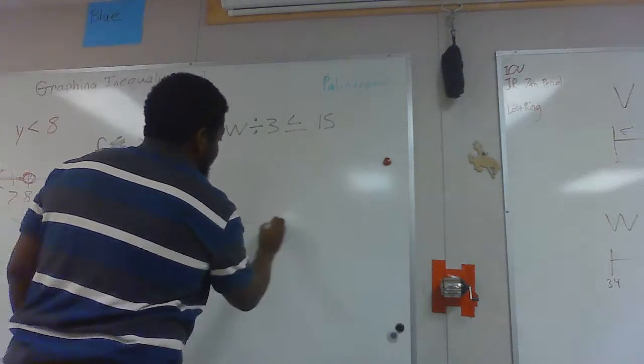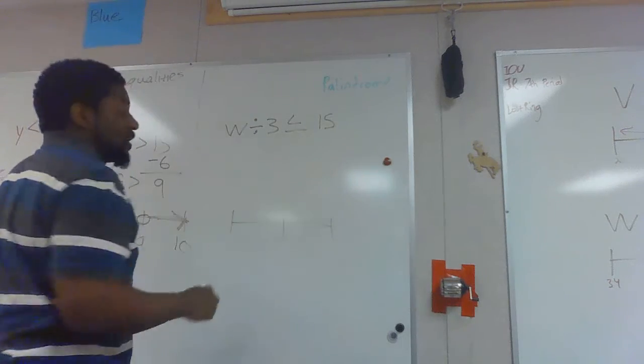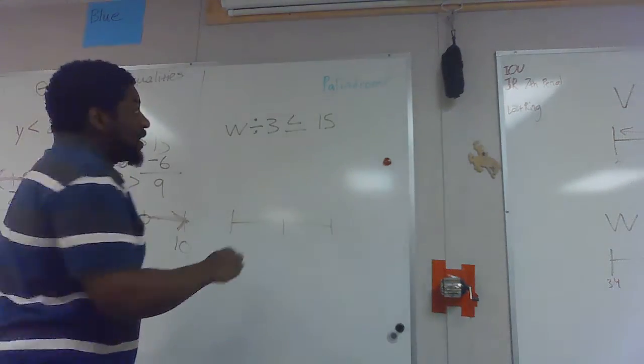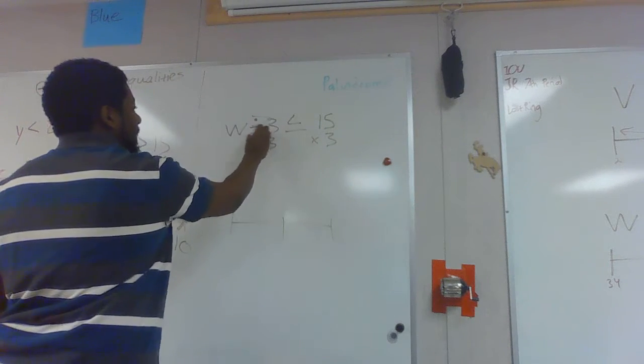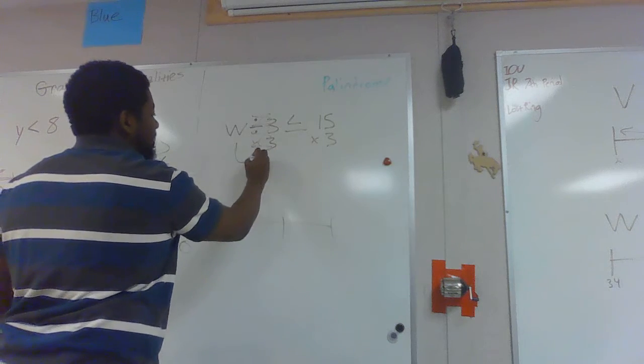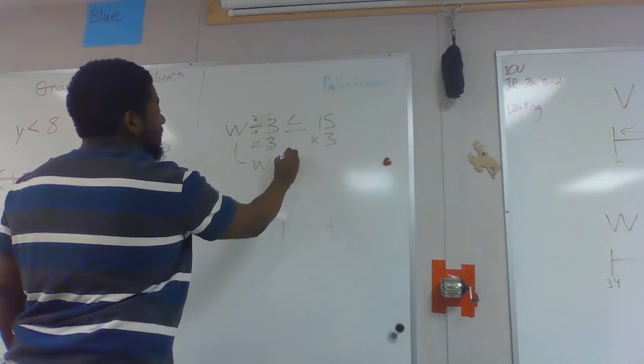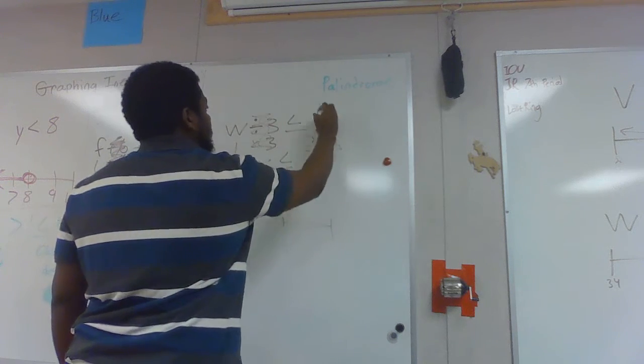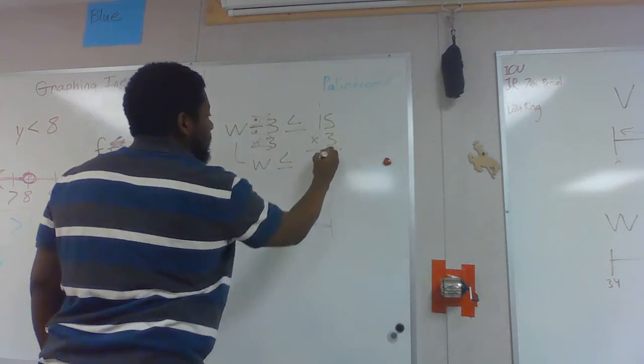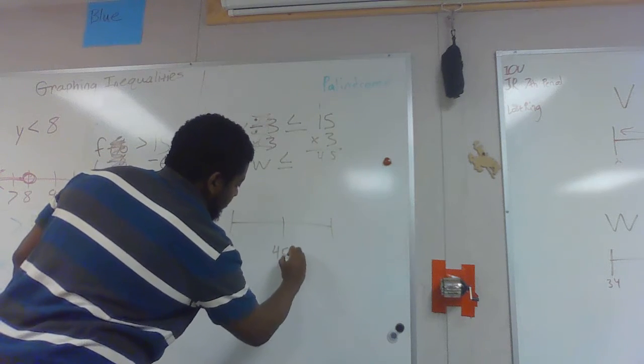So before we can do the graph, I know I need to finish the math. I'm just going to draw the graph up. The opposite of divide by 3 is times 3 on both sides. These are opposites so they cancel. I get just w is less than or equal to 45, which means 45 is going to go here.